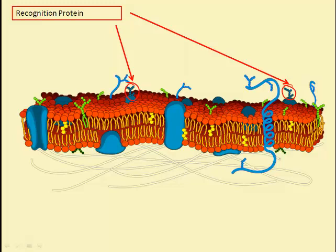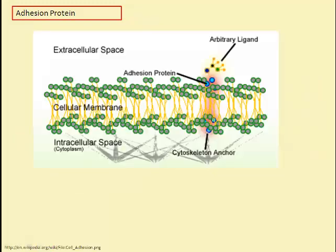Recognition proteins allow cells to recognize each other as being the same type, such as cardiac muscle cells, or as being different from one another. They also help cells recognize where they belong in the body. Another type of glycoprotein is the adhesion protein, which attaches cells to each other or provides anchors for internal filaments and tubules, stabilizing cell shape.